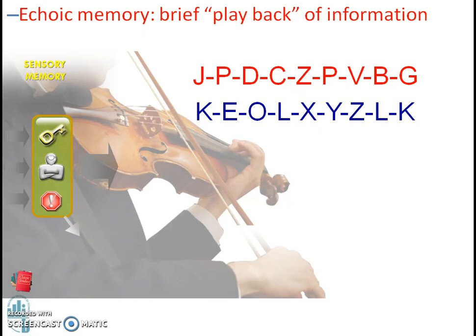The first list caused interference and thereby made it more difficult to remember. When we try to pronounce J, K, P, D, C, Z, P — it is difficult because there is a lot of interference. On the other hand, in the second list, if we try to pronounce K, E, L, O, L, X, Y, Z, L, K — it becomes easy.